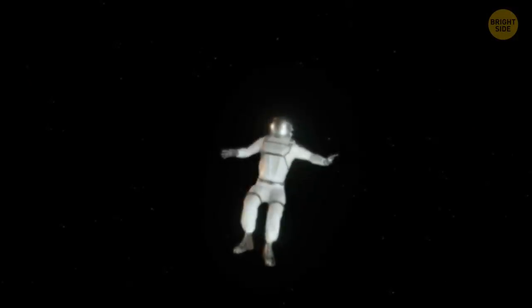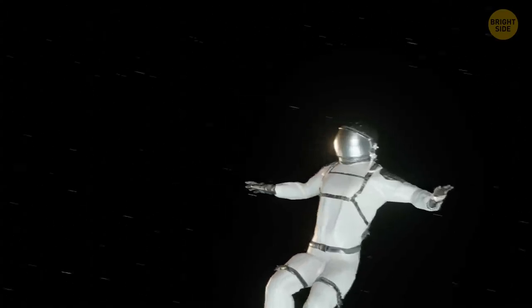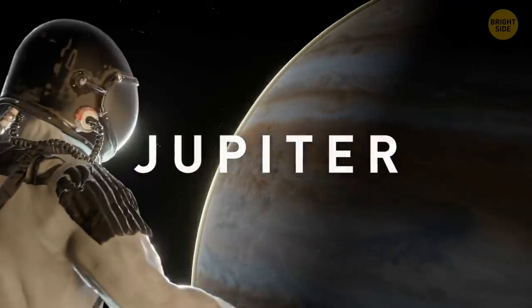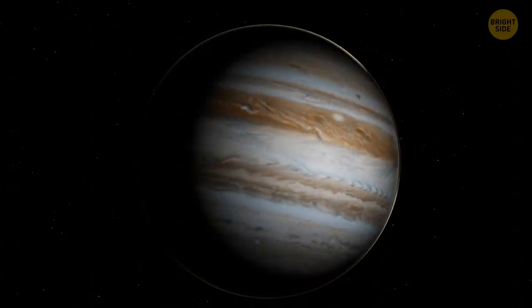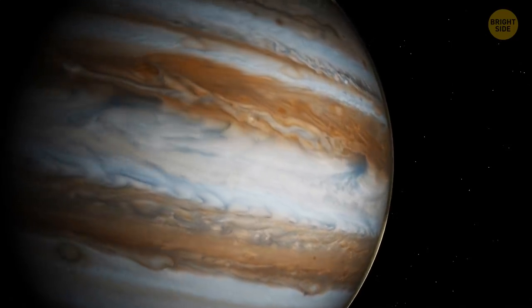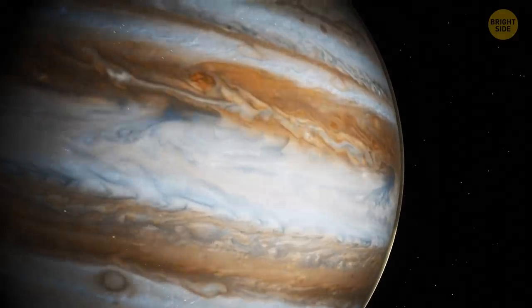You leave rocky planets behind and close in on the first gas giant on your way. It's Jupiter. Thick brown, yellow, red, and white clouds hide its surface. They make the planet look colorful and beautifully striped. You hit the button.